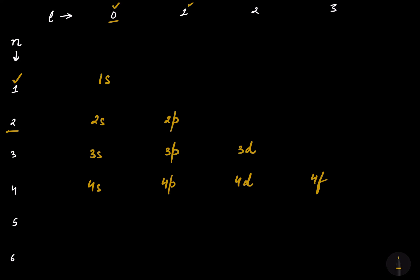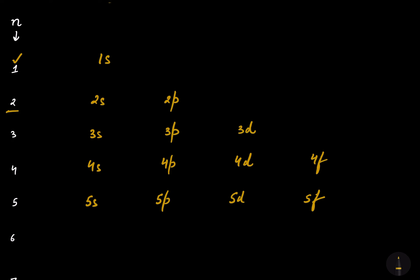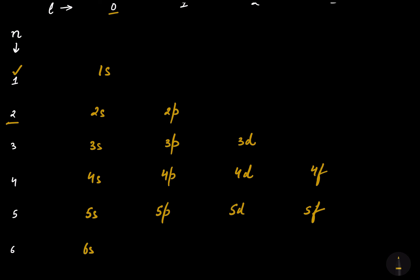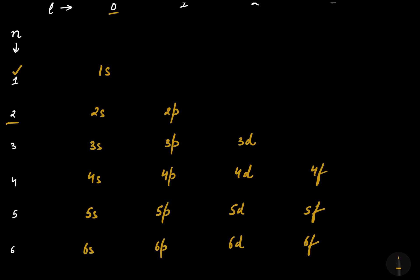For n = 5: l = 0 gives 5s, l = 1 gives 5p, l = 2 gives 5d, l = 3 gives 5f. For n = 6: l = 0 gives 6s, l = 1 gives 6p, l = 2 gives 6d, l = 3 gives 6f. For n = 7: l = 0 gives 7s, l = 1 gives 7p, l = 2 gives 7d, l = 3 gives 7f.